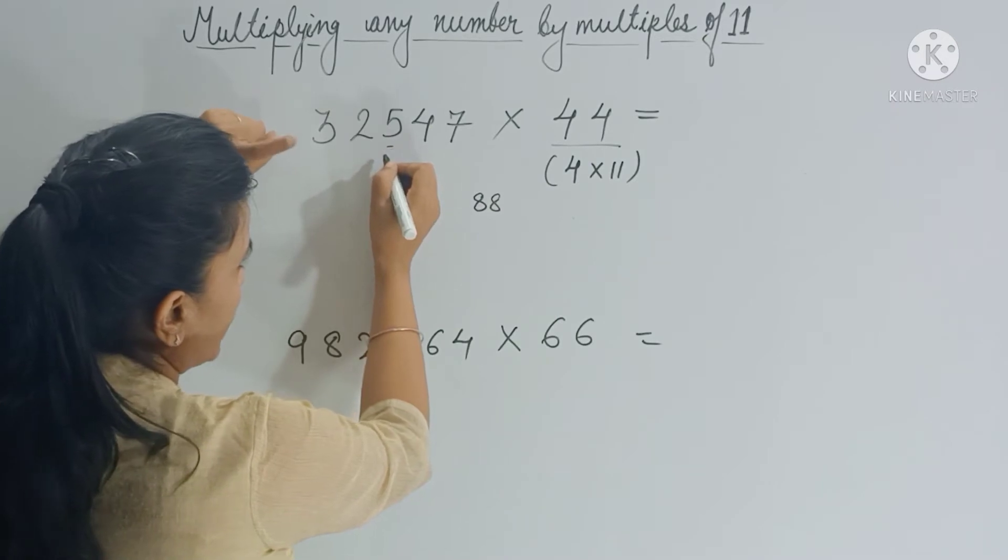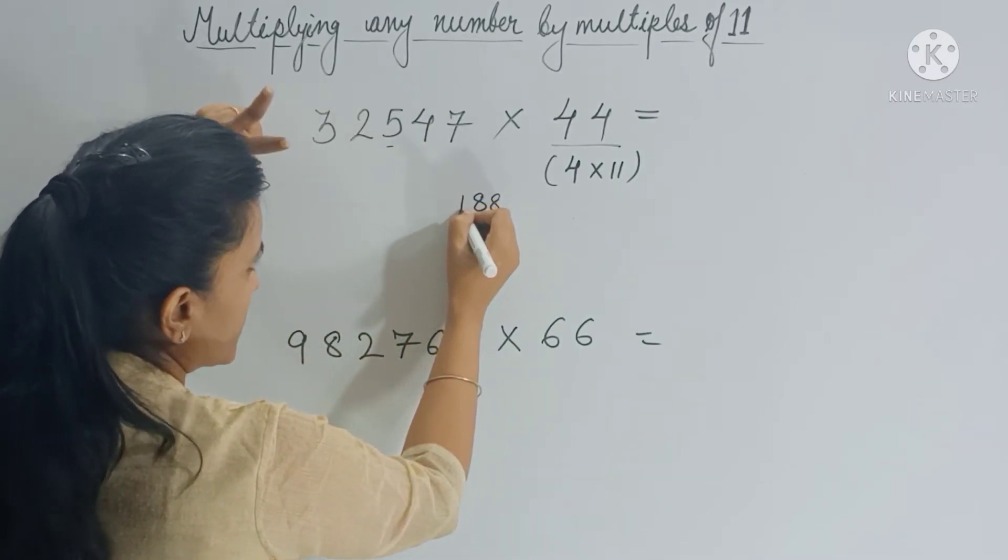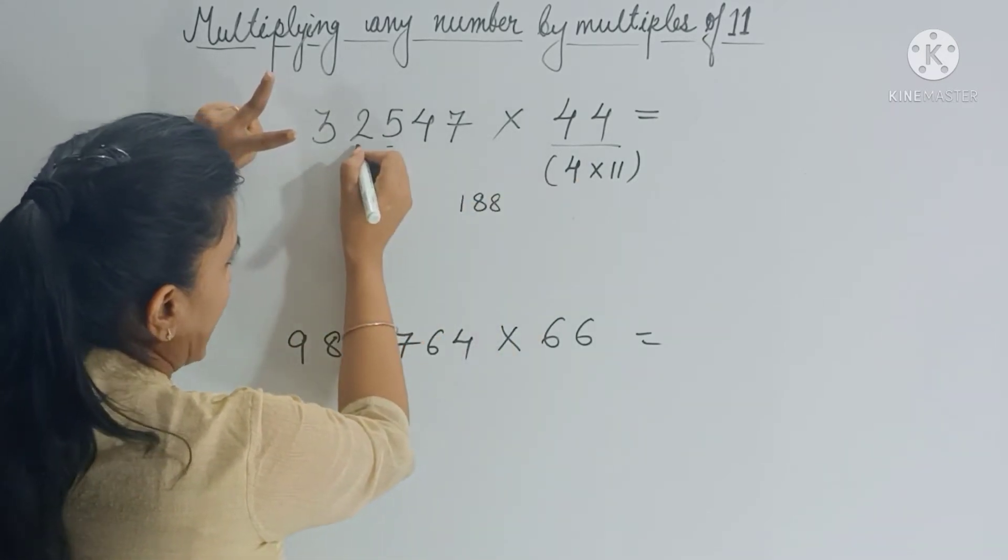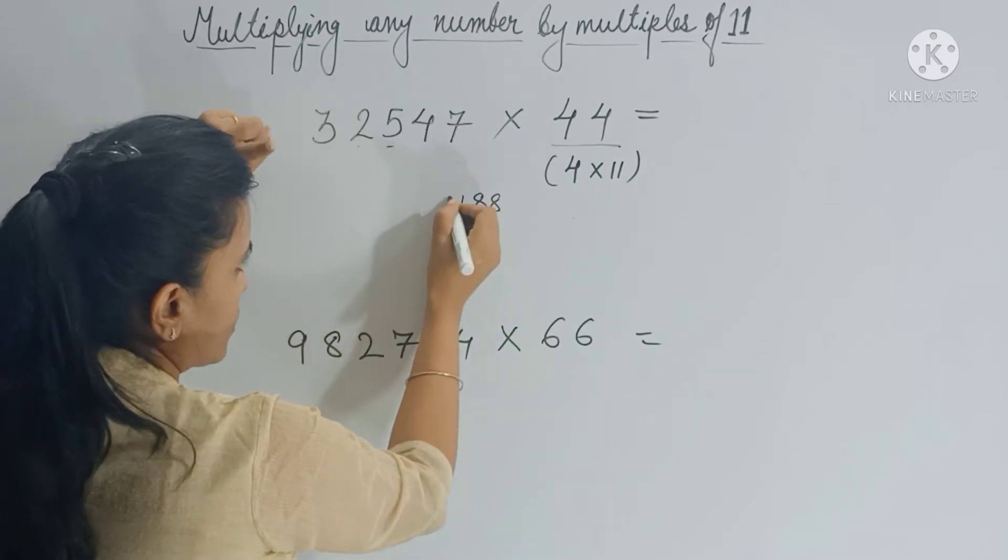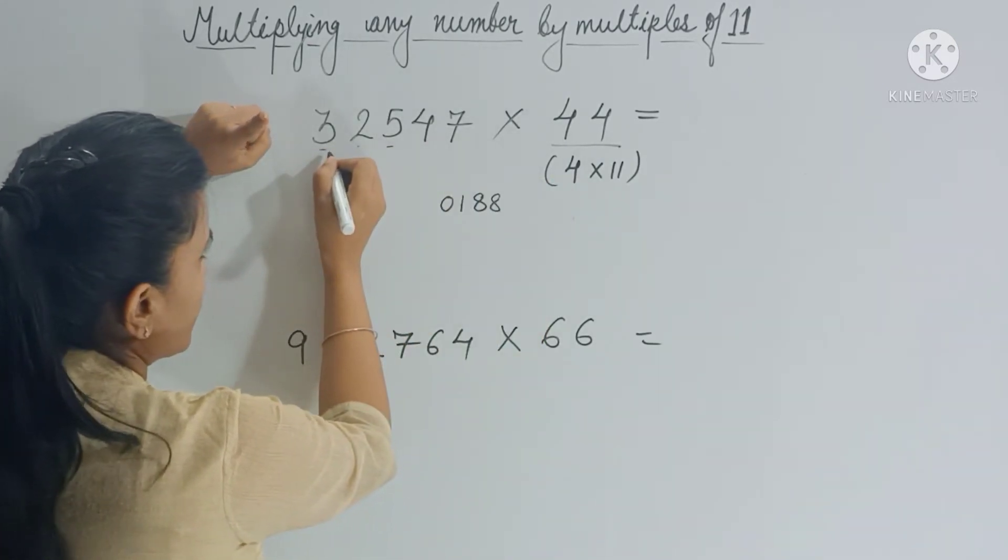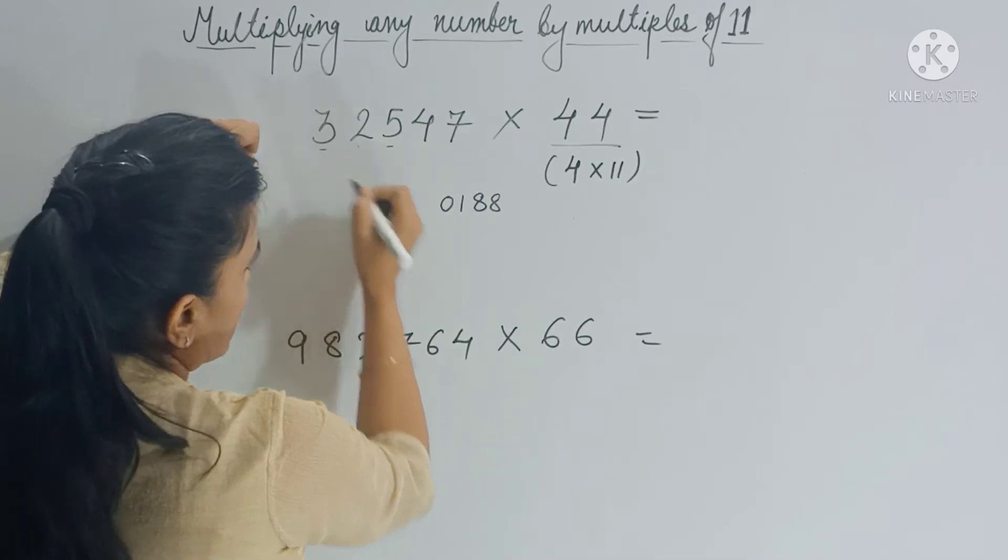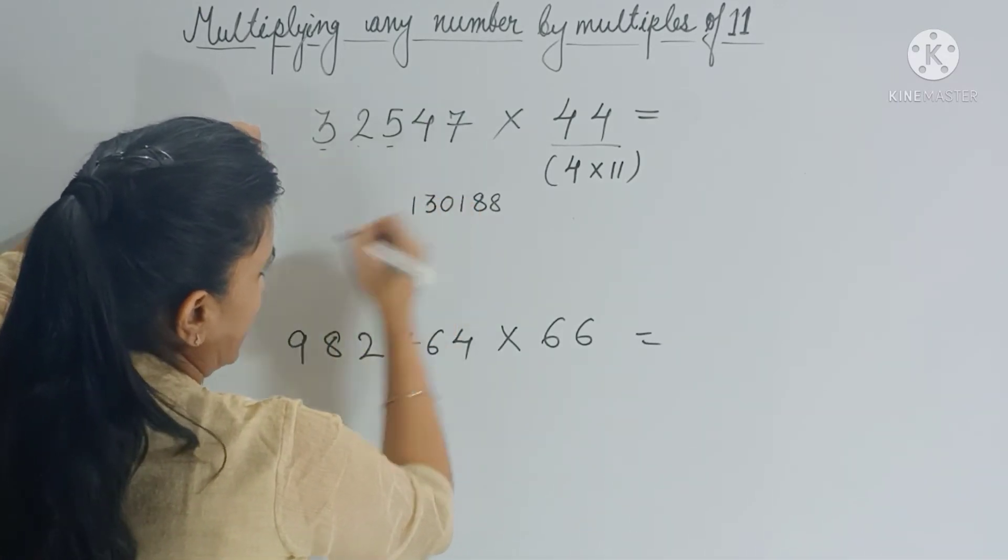4 times 5 is 20, 20 plus 1 is 21, 2 is carry forward. 4 times 2 is 8, 8 plus 2 is 10, so 1 is carry forward. 4 times 3 is 12 plus 1 is 13.